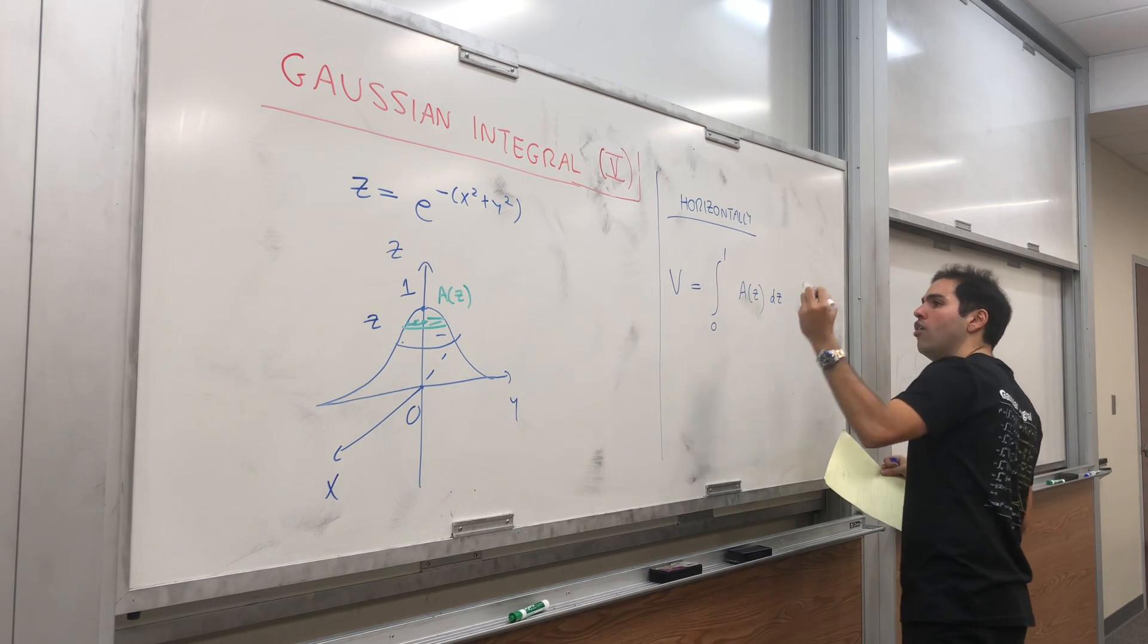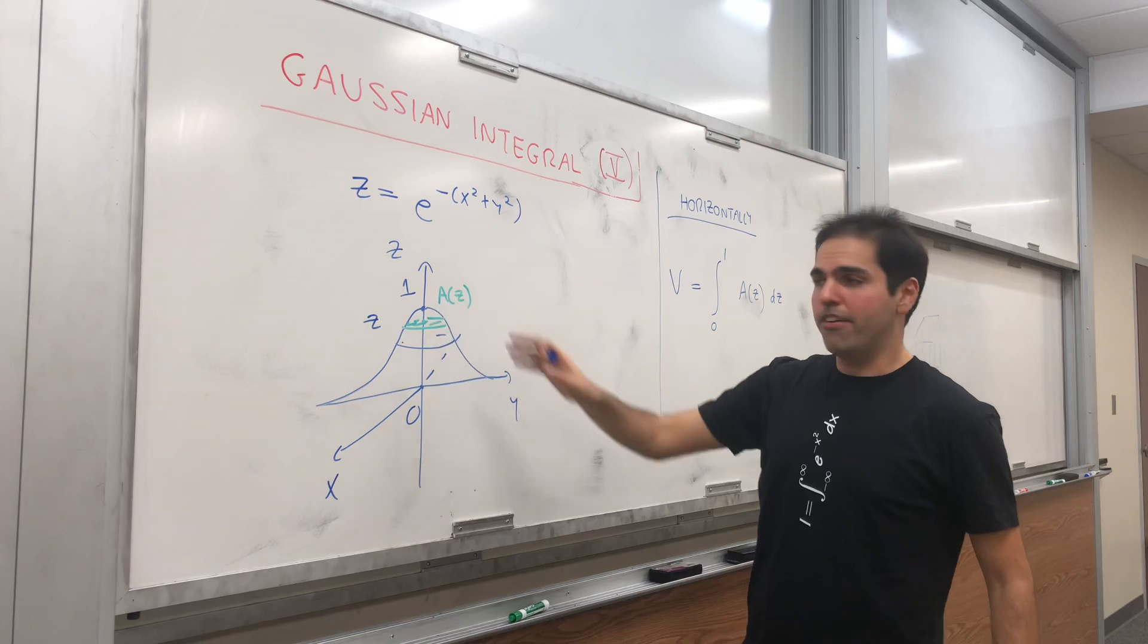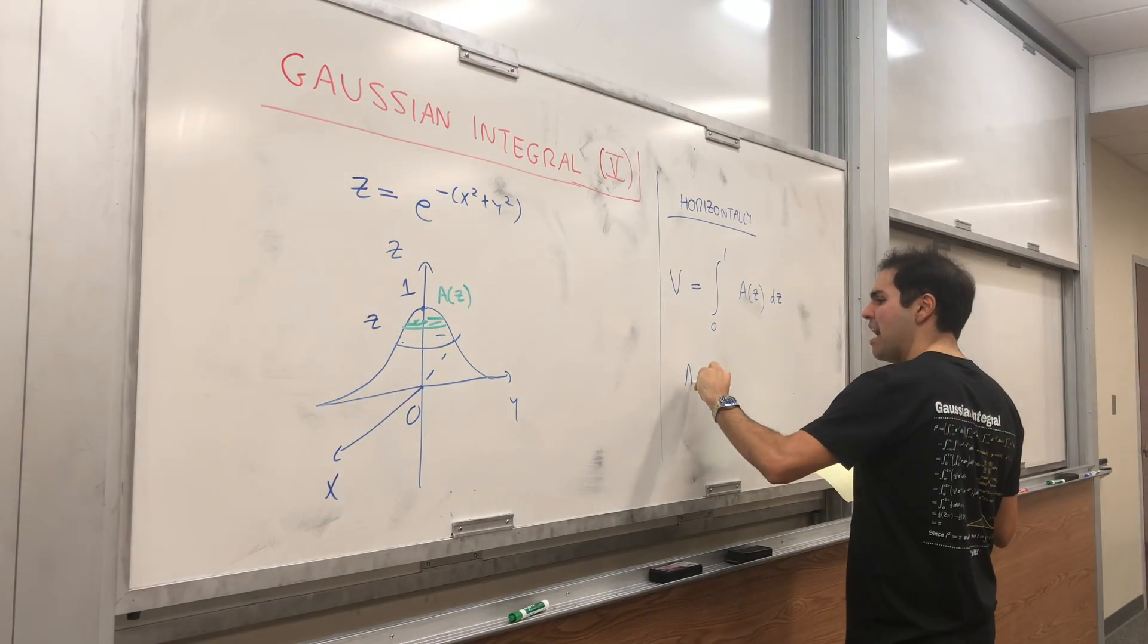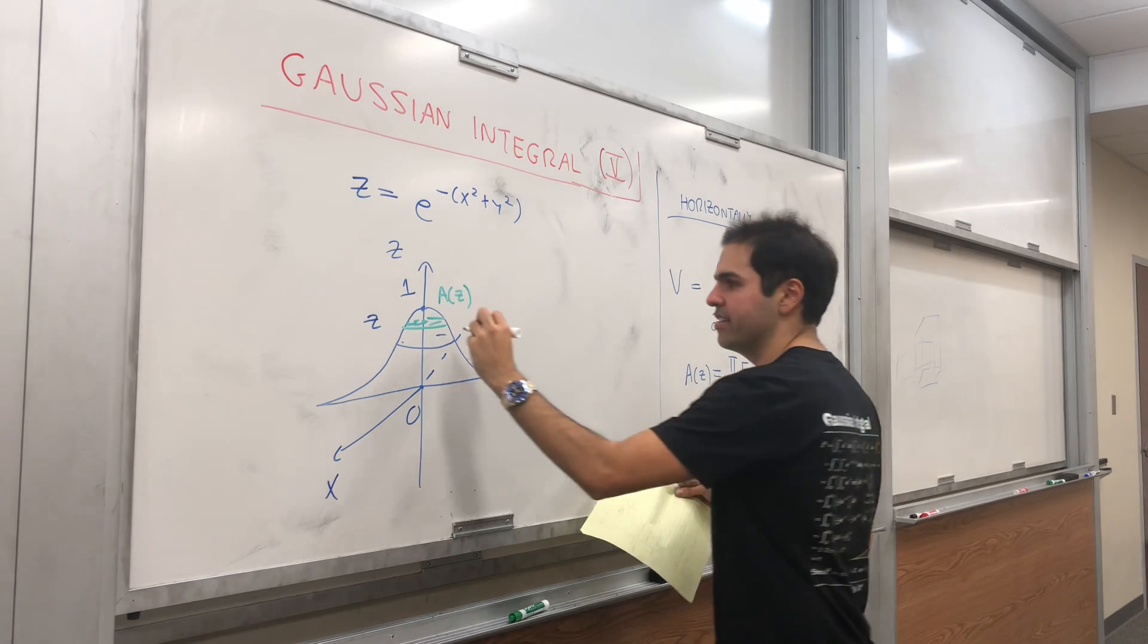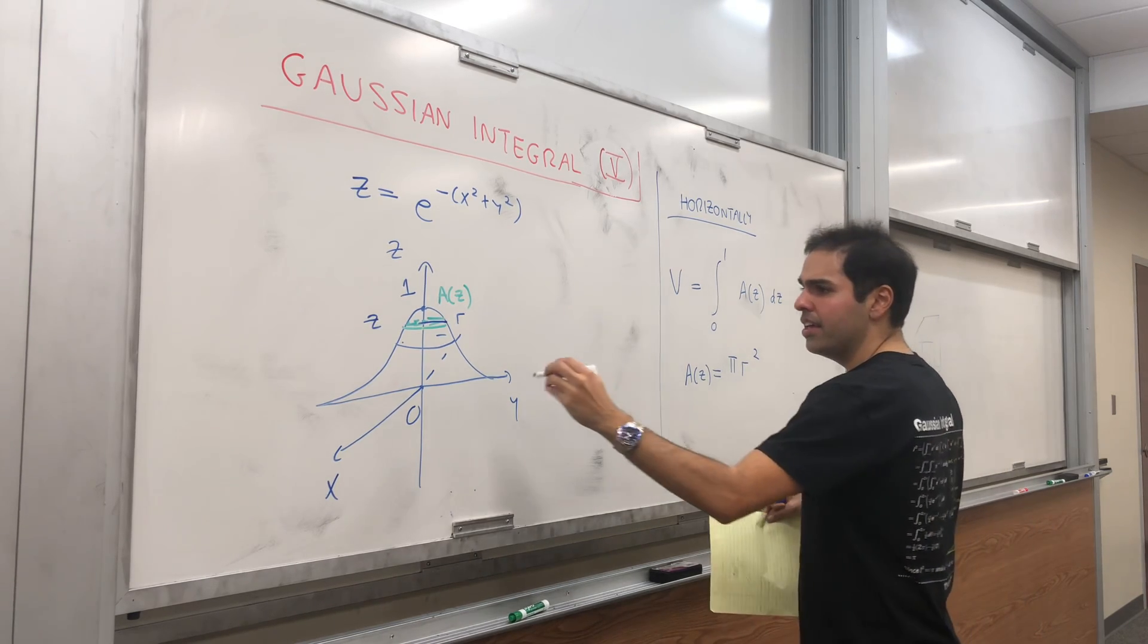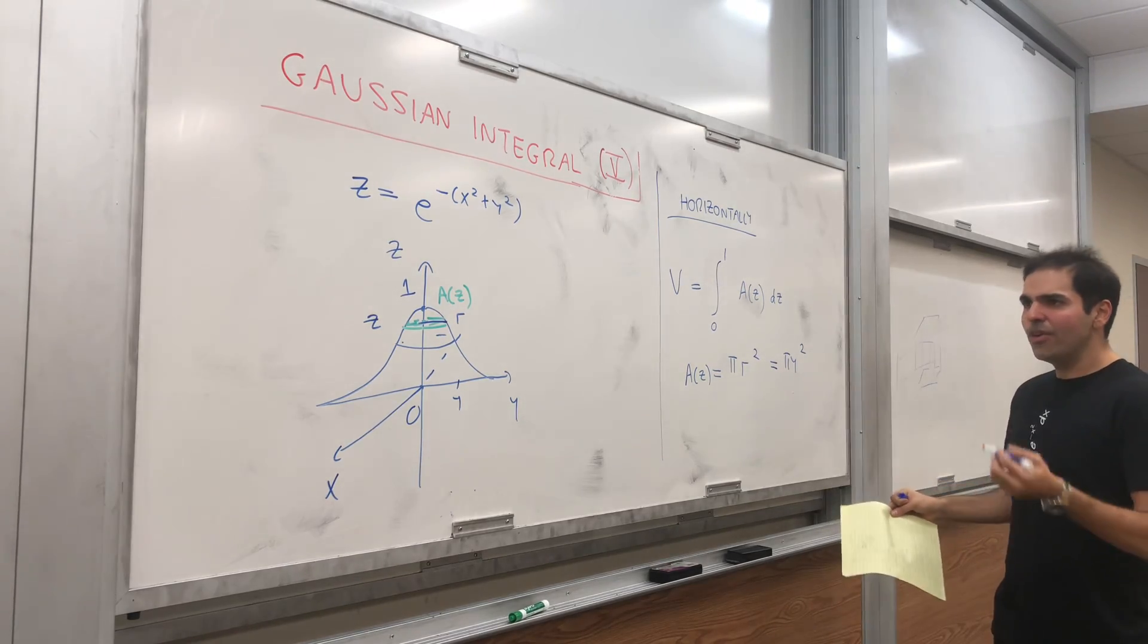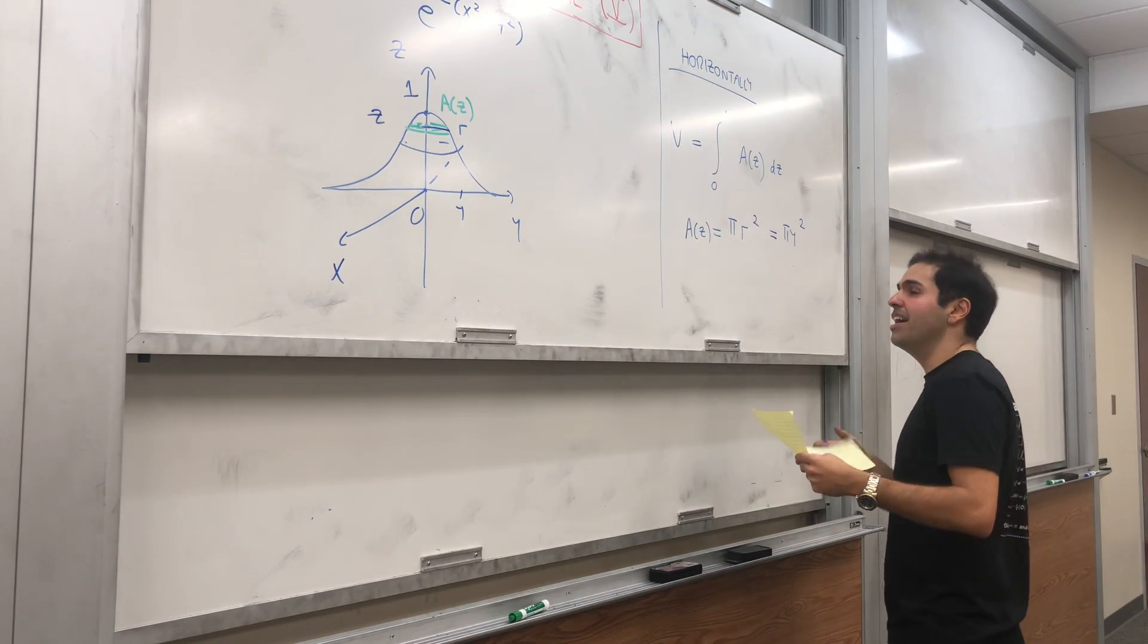Let's calculate this area. Notice the slices are disks, so the area of z is just π times the radius squared, so πr². In this case, the radius is y, so it's πy². Now let's see what y is in terms of z.